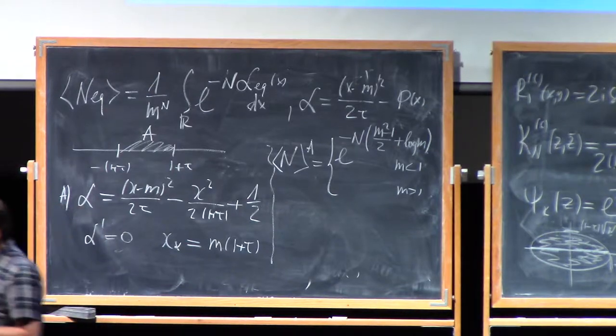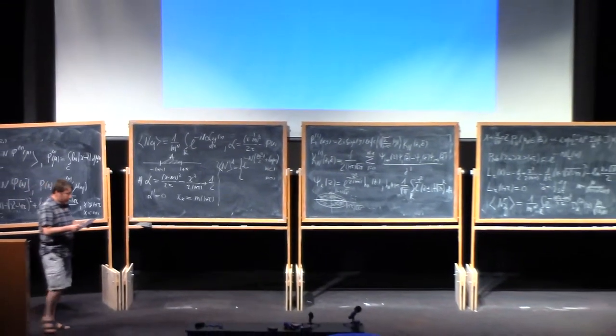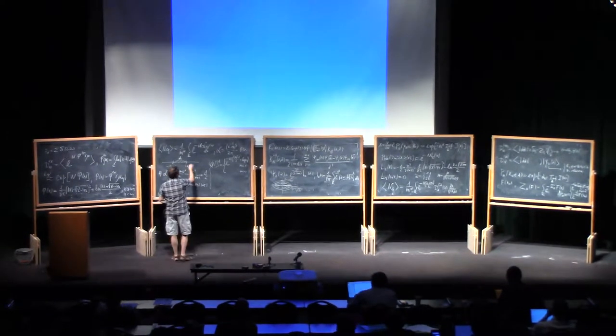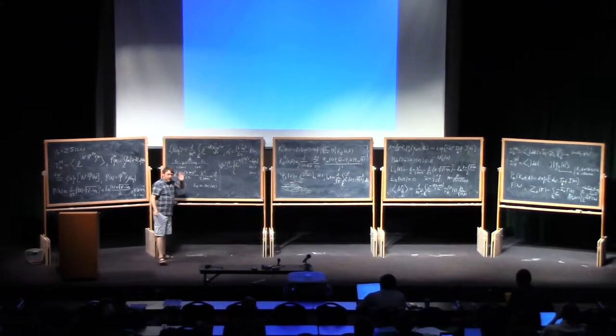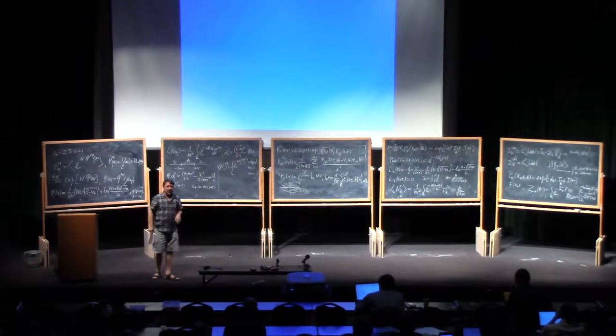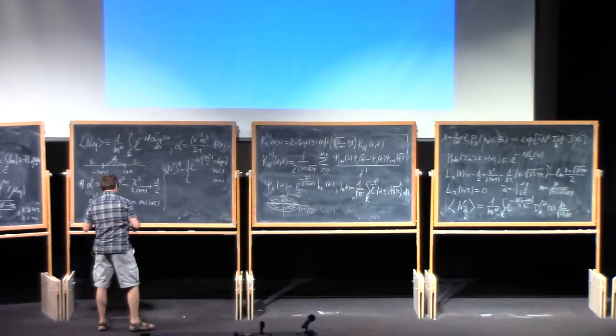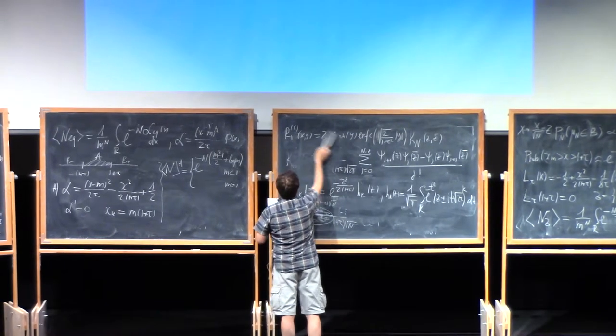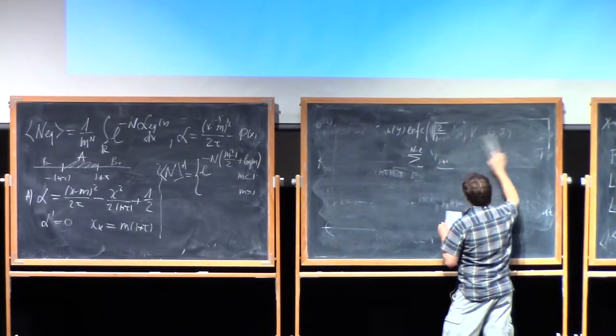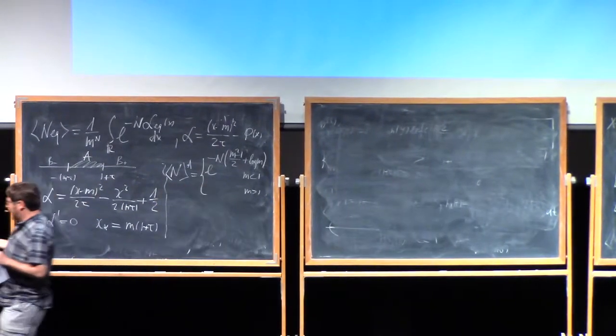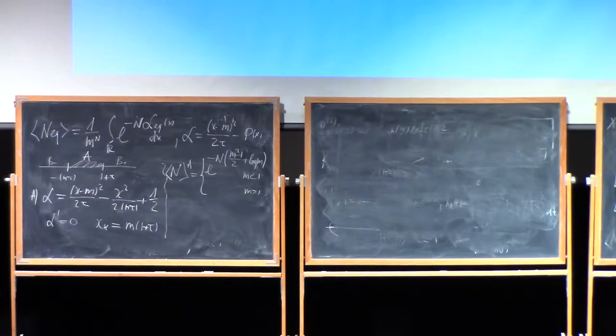Similarly, one should consider contribution from part b, or I call it rather b plus. Here's b plus, here's b minus. One can show that contribution from b minus is immediately clear that it will be subdominant. About b plus, one should be more accurate. As you may guess, here calculations look at least superficially more complicated due to the very fact that one should take this piece with this relatively long expression.